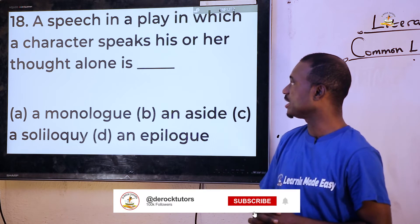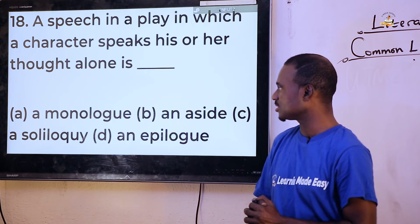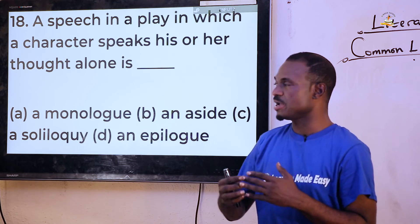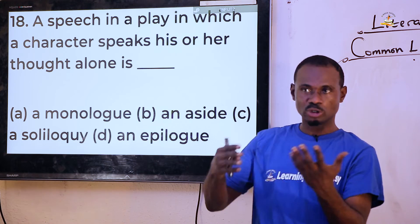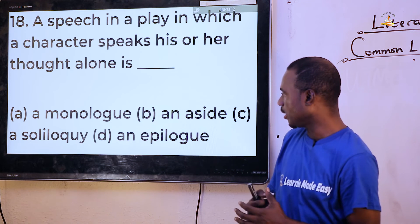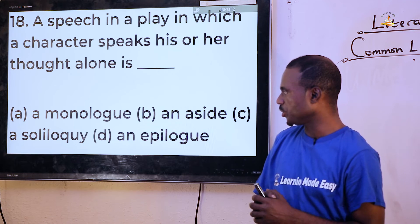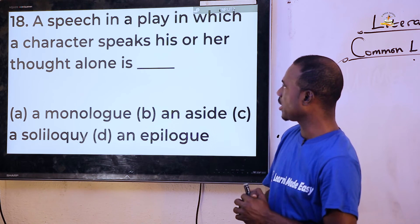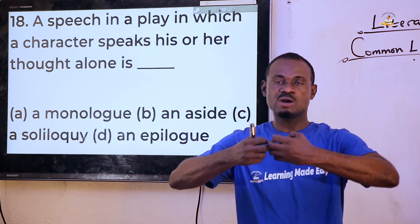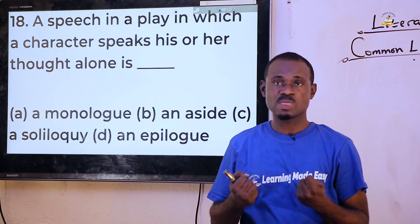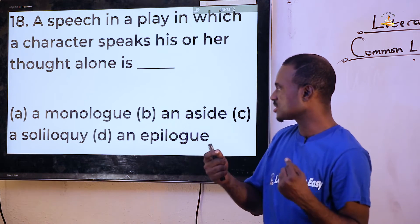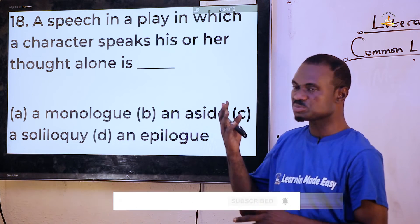Question eighteen: 'A speech in a play in which a character speaks his or her thoughts alone.' It is not a monologue, even though monologue is a lone drama. Not aside, not epilogue — epilogue is a speech made after a play. The answer is soliloquy, where a character speaks his mind to the audience. Other characters are not absent, but unlike aside, they are programmed not to hear what the character is saying.